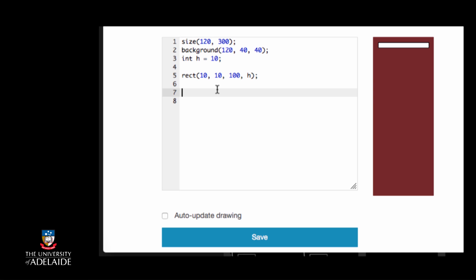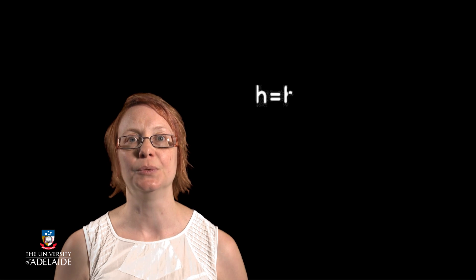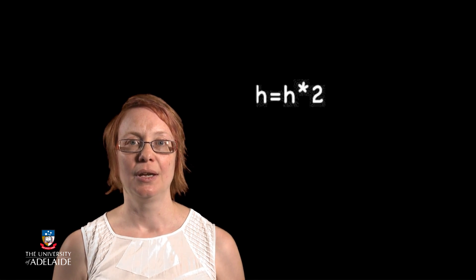For example, here we change the value of h to be the current value of h multiplied by 2. So you can interpret this as first working out the value of the expression on the right-hand side of the equal sign. In this case, it is the value of the expression, or the current value of h multiplied by 2.